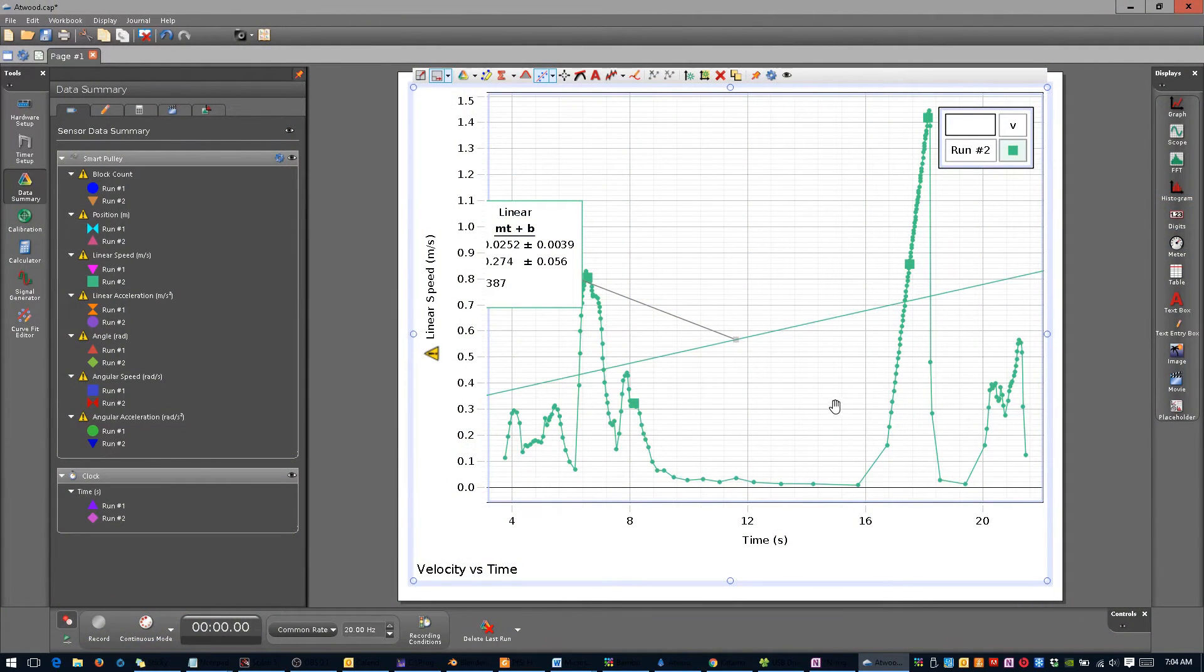After performing all 10 trials, your next step is to analyze your data. The relevant portion of your data is the straight, upward sloping region during which the system was undergoing constant acceleration.